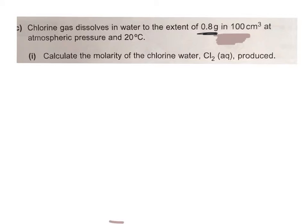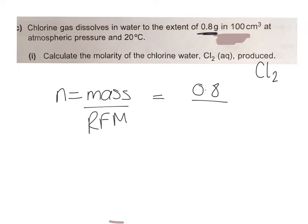So the number of moles in 0.8 grams - we need to use the equation n equals mass over RFM. The mass is 0.8 grams and the RFM of chlorine gas, you need to remember chlorine's diatomic so it's Cl2, and so its RFM is going to be 35.5 times 2 which is 71. So 0.8 divided by 71.